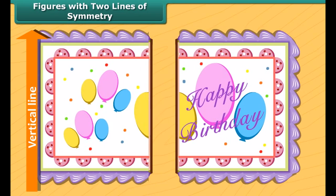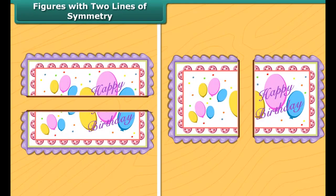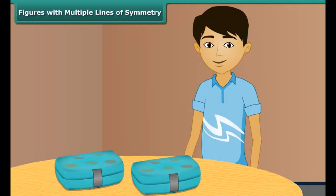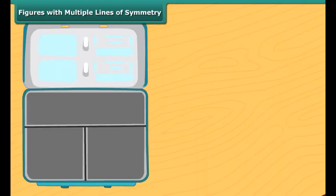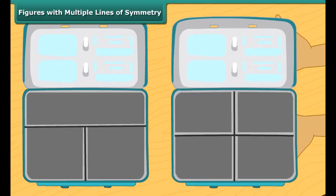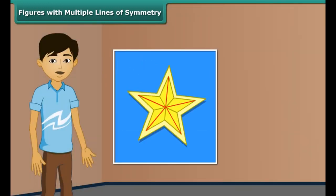Manu and Mrinal have one rectangular cake. Each of them wants an exact half of it. The cake can be divided in two ways to give equal halves. The cake can be divided along the horizontal line so that its two halves match each other. It can also be divided along the vertical line. So the cake has two lines of symmetry along which it can be divided to give two identical halves.